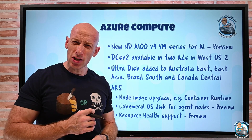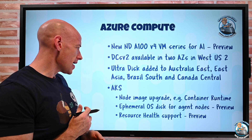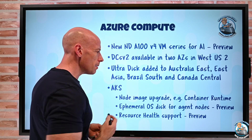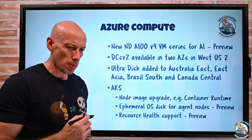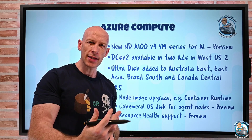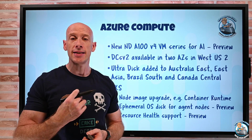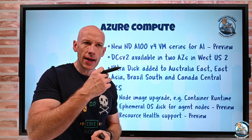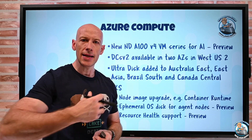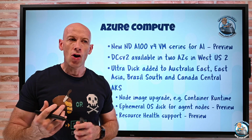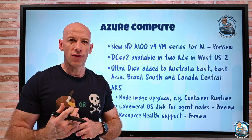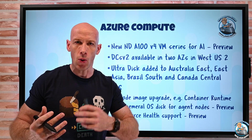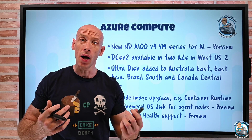Azure Kubernetes Service (AKS) has a new node image upgrade option. I can now update OS updates and the container runtime independently, without having to do a full Kubernetes upgrade, which is what we had to do in the past.